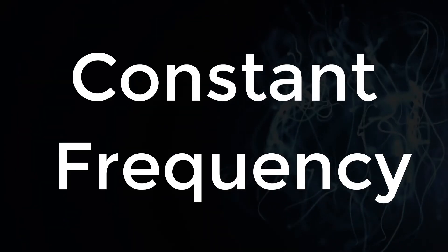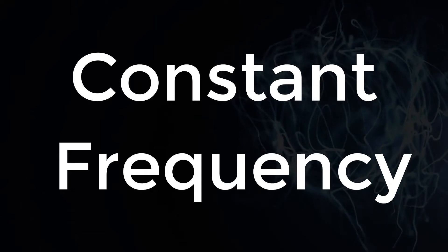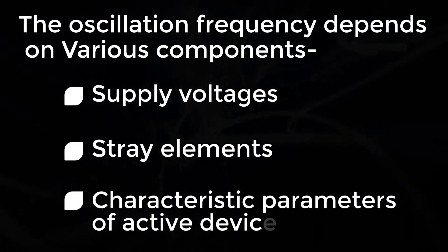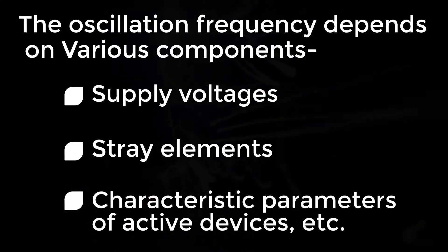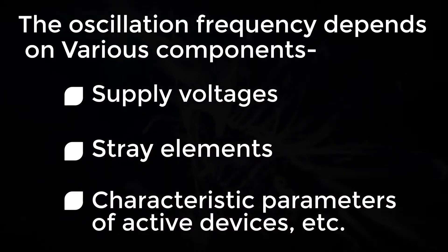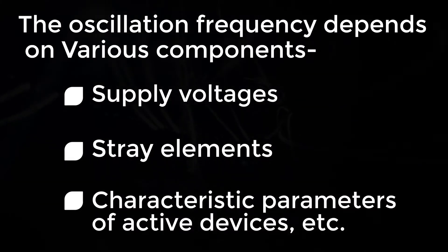The closer the output to a constant frequency, the better the frequency stability. The oscillator frequency depends on various features of the circuits such as various components, supply voltages, stray elements, characteristic parameters of active devices, etc.